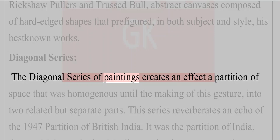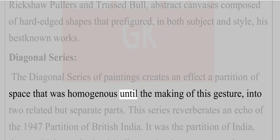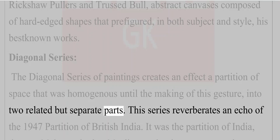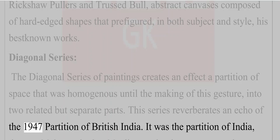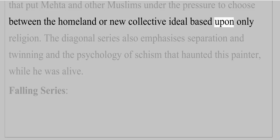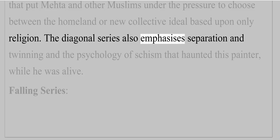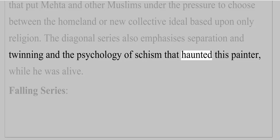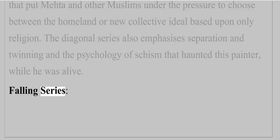The diagonal series of paintings creates an effect of partition of space — homogenous until the making of this gesture — into two related but separate parts. This series reverberates an echo of the 1947 partition of British India. It was a partition that put Mehta and other Muslims under the pressure to choose between the homeland or a new collective ideal based upon only religion. The diagonal series also emphasizes separation and twinning, and the psychology of schism that haunted this painter while he was alive.